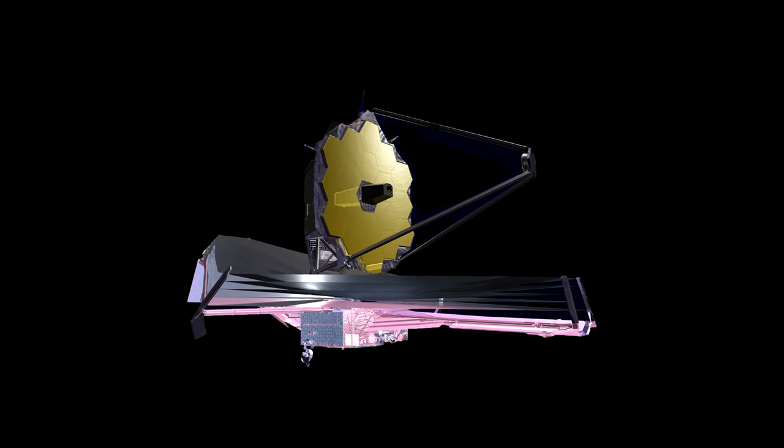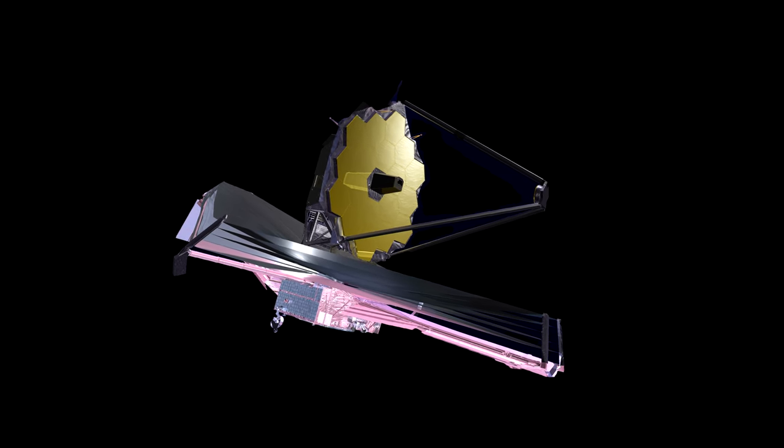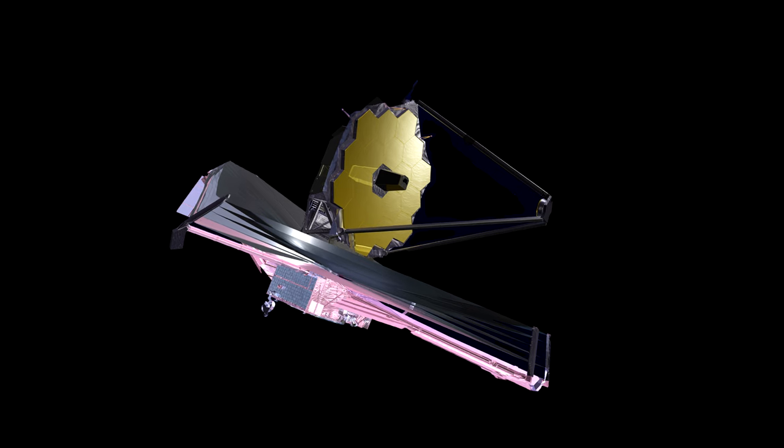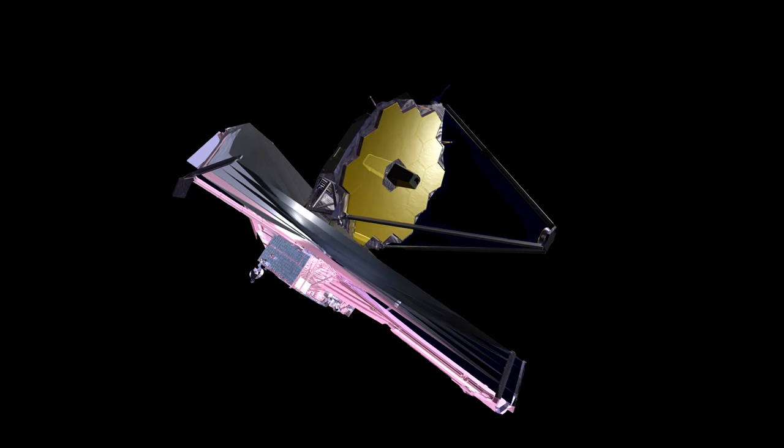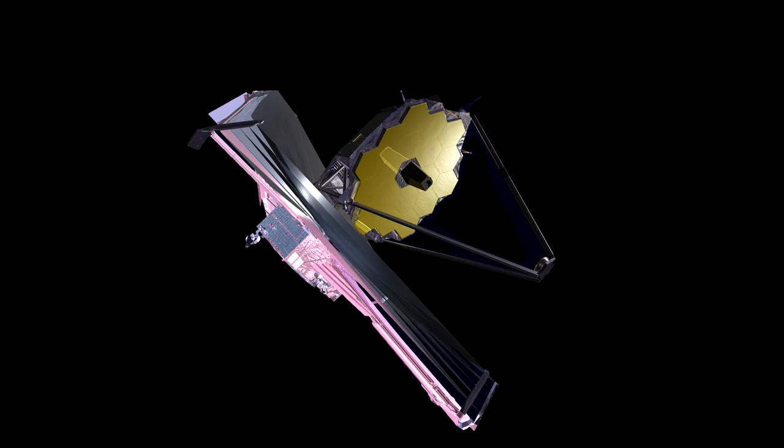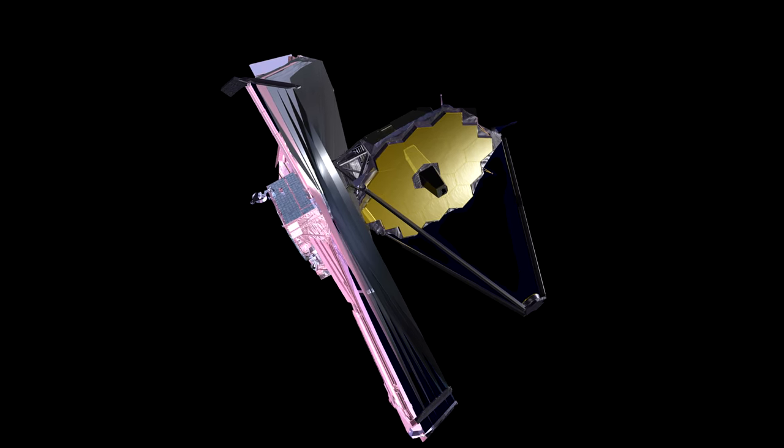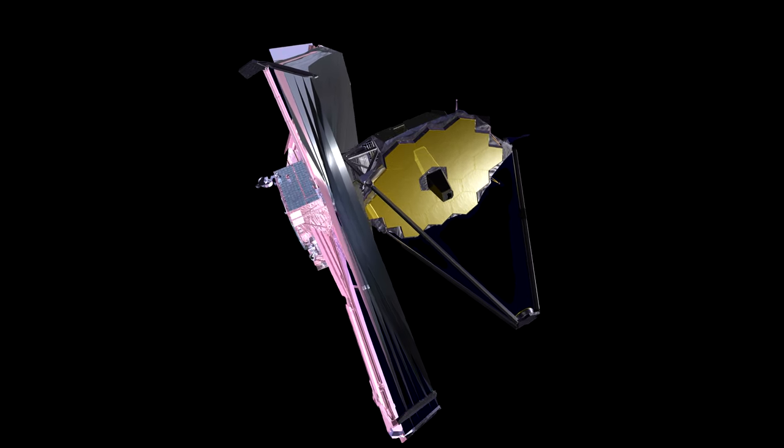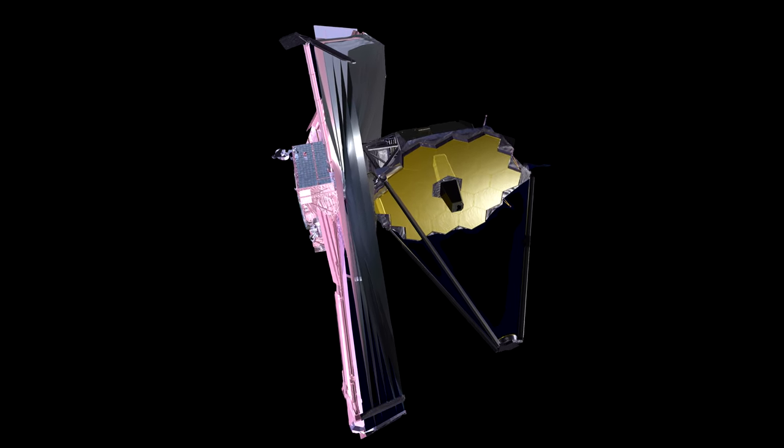The sunshield is particularly important because of the telescope's extreme sensitivity to heat. Webb primarily observes infrared light, which can sometimes be felt as heat. Because the telescope will be observing the very faint infrared signals of very distant objects, it needs to be shielded from any bright, hot sources. This also includes the telescope's own electronics equipment.